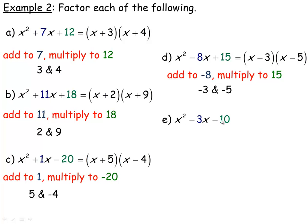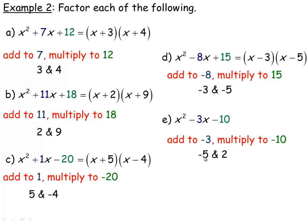One last example: x squared minus 3x minus 10. We're looking for two numbers that add to negative 3 and multiply to negative 10. When the product is negative, one number has to be positive and one negative. The factor pairs of 10 are 1 and 10, or 2 and 5. We can't make 1 and 10 add to negative 3, but negative 5 and 2 add to negative 3 and multiply to negative 10. So the factors are x minus 5 and x plus 2. That's how you factor x squared plus bx plus c.